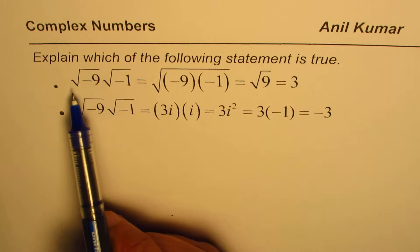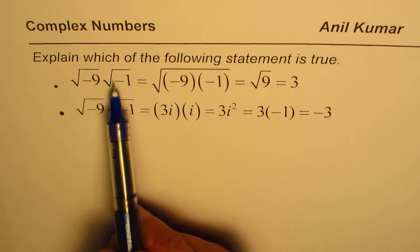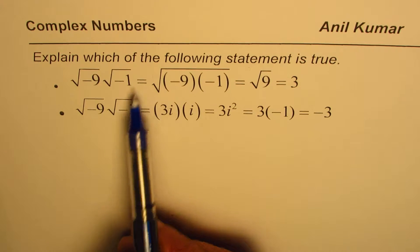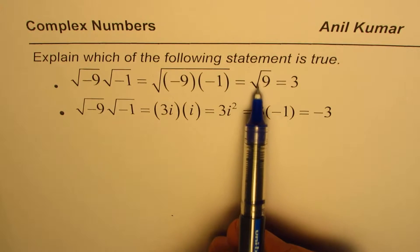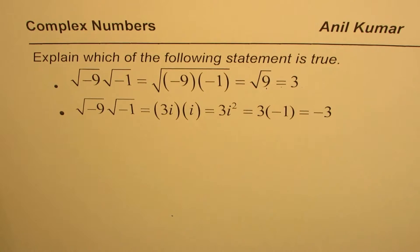The first one here is square root of minus 9 times square root of minus 1 equals square root of minus 9 times minus 1, that gives you square root of 9, and that is equal to 3.